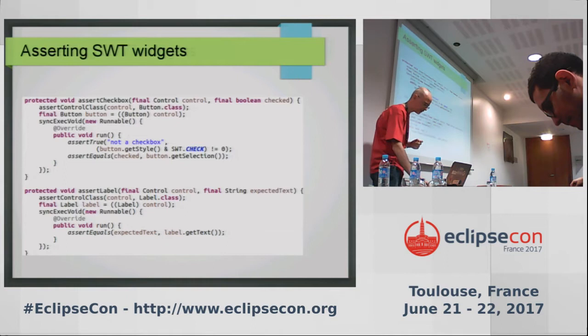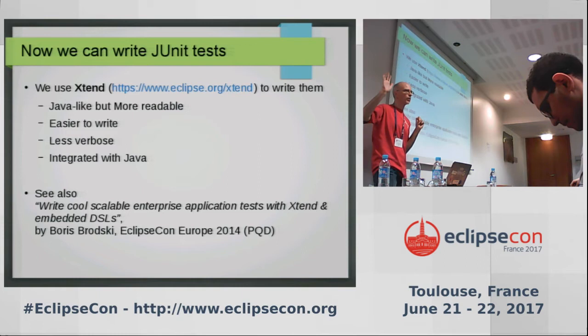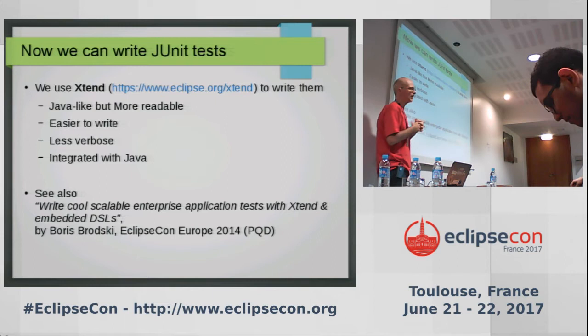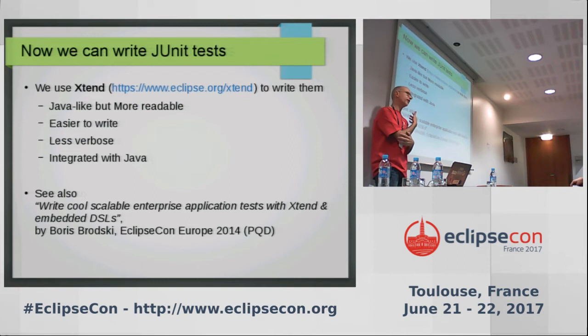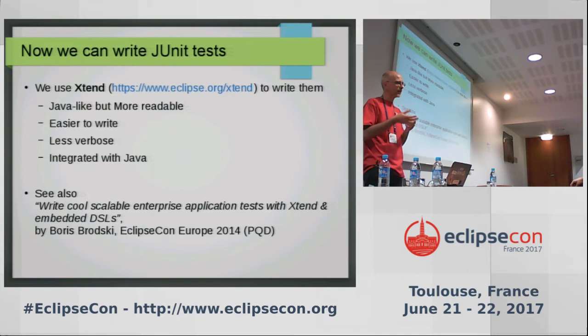In these examples we will use Xtend. For those not familiar, it's a DSL — a Java DSL implemented in Xtext — which is a kind of more readable Java but completely interoperable with the Java type system. Even if you're not familiar with Xtend, you will have no problem following the examples. There's also a nice talk from EclipseCon Europe 2014 given by Boris that shows how to easily write readable tests with Xtend.